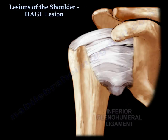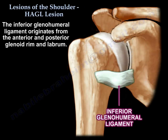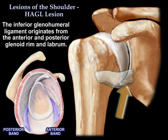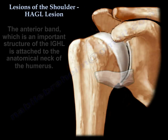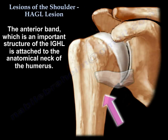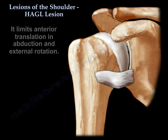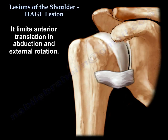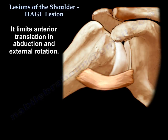The inferior glenohumeral ligament originates from the anterior and posterior glenoid rim and labrum. The anterior band, which is an important structure, is attached to the anatomic neck of the humerus. It limits anterior translation in abduction and external rotation.